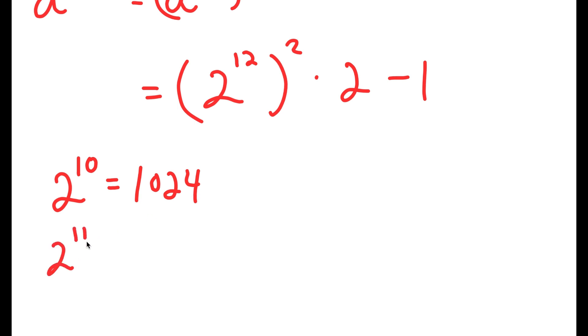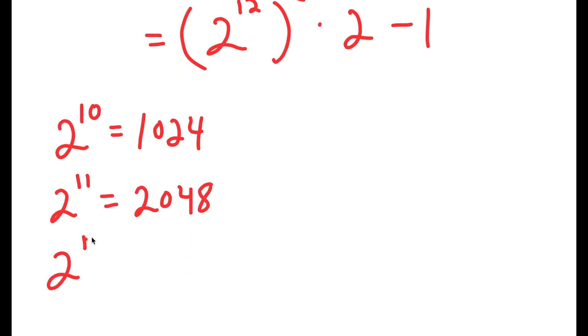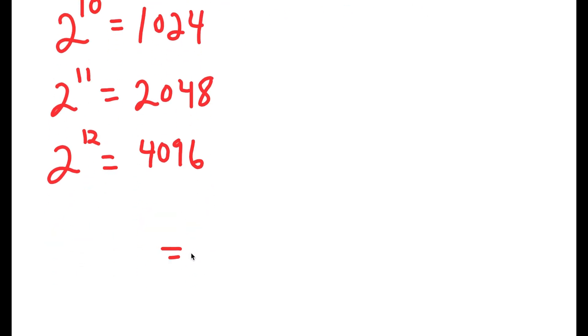So 2 to the power of 11 is going to be double of 1,024, which is 2,048. And 2 to the power of 12, which is the value we're looking for, is going to be double of 2,048, which is 4,096. So now I get 4,096 squared times 2 minus 1.